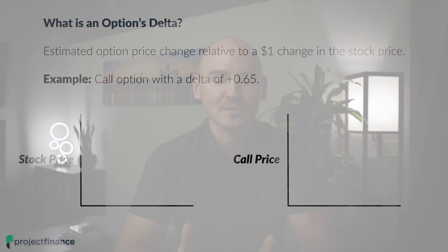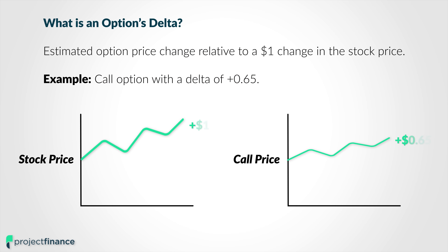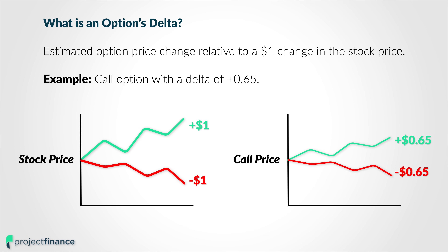To recap: an option's delta is the option's expected price change relative to a $1 change in the stock price. So if we have a call option with a delta of 0.65, that means if the stock price increases by $1, that call option is expected to gain $0.65 of value, and if the stock price falls by $1, that call option is expected to lose $0.65 of value. I want to introduce three things to keep in mind regarding option deltas and how they change over time, and then we're going to explore intuitively why that might be, as opposed to just memorizing things.